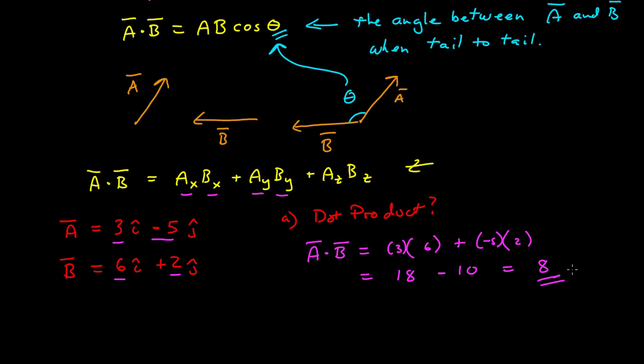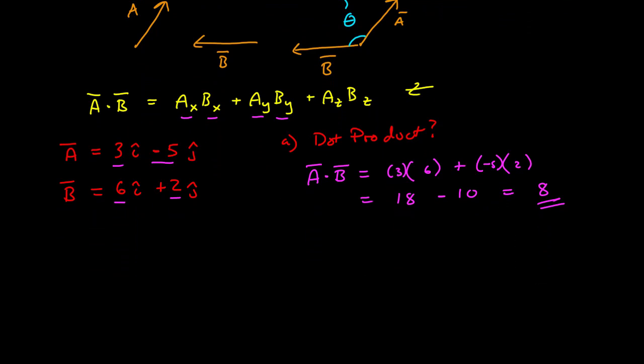If there were units, the units would be the product of the units of vector a and b. That was calculating the dot product using the components.